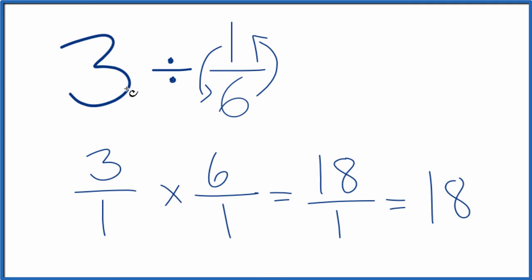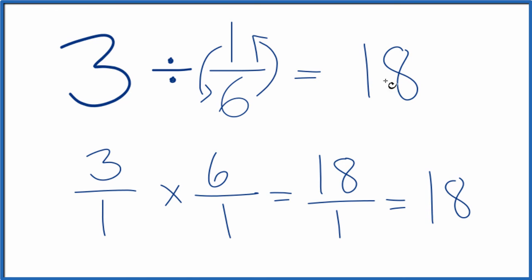So 3 divided by 1/6 equals 18. If you take 18 and multiply by 1/6, you'll get 3 — so we did this correctly. This is Dr. B, dividing 3 by 1/6.